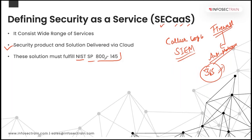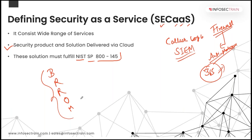The five essential characteristics of NIST SP 800-145 are: broad network access, rapid elasticity, resource pooling, on-demand self-service, and measured service. When any security service fulfills these things, you call it security as a service — security services being provided as a cloud service.